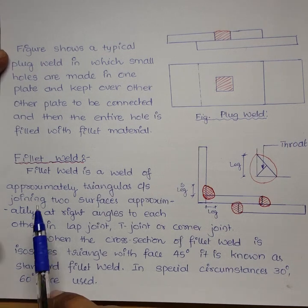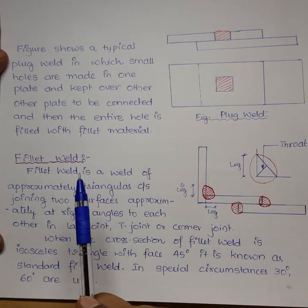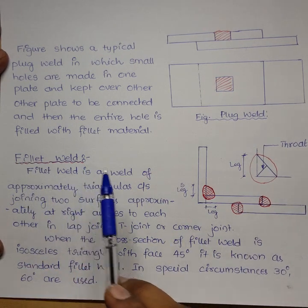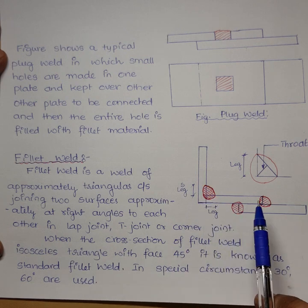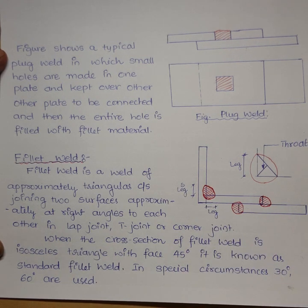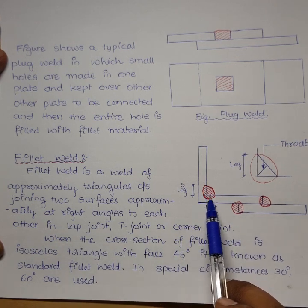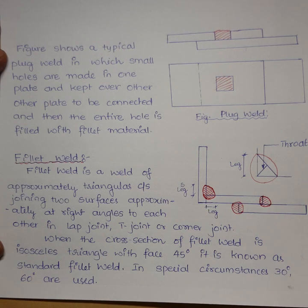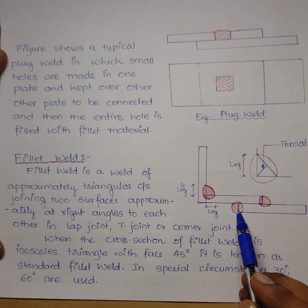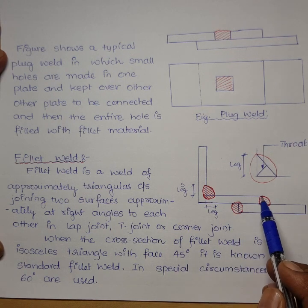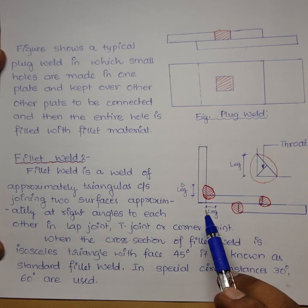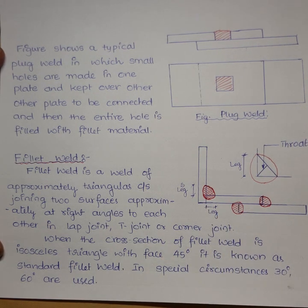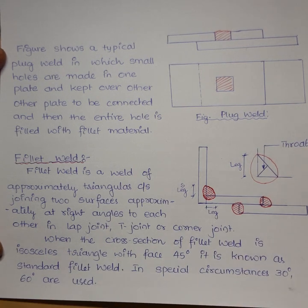Next we will go with the fillet weld, then slot weld and plug weld. The main difference between fillet weld and butt weld is that the two plates in butt weld are kept parallel, whereas in fillet weld the two surfaces are at 90 degrees or any other angle. Fillet weld is the most commonly used — about 80 to 90 percent of welds are fillet welds.